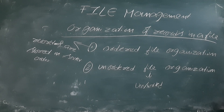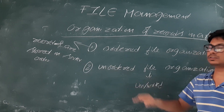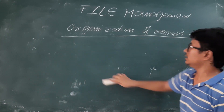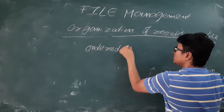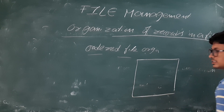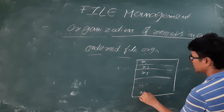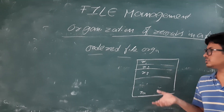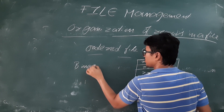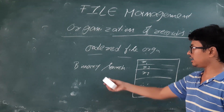Now let's discuss the advantages and drawbacks of ordered file organization, and similarly for unordered file organization. In ordered file organization, the records are stored in sorted order — record 1, record 2, record 3, up to record N. The advantage is that searching will be easy, because if all the records are in sorted order, we can apply binary search.